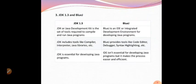Distinguish between JDK and BlueJ. JDK, or Java Development Kit, is the set of tools required to compile and run Java programs, whereas BlueJ is an IDE — Integrated Development Environment — for developing Java programs. JDK includes tools like compiler, interpreter, and Java libraries, whereas BlueJ provides tools like code editor, debugger, and syntax highlighting. JDK is essential for developing Java programs, whereas BlueJ is not essential but makes the process easier and more efficient.